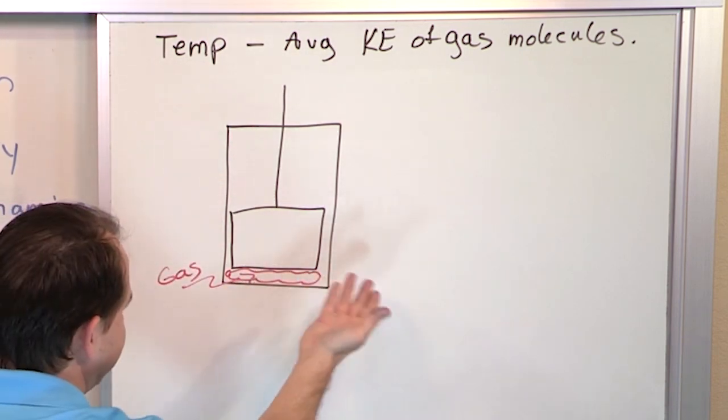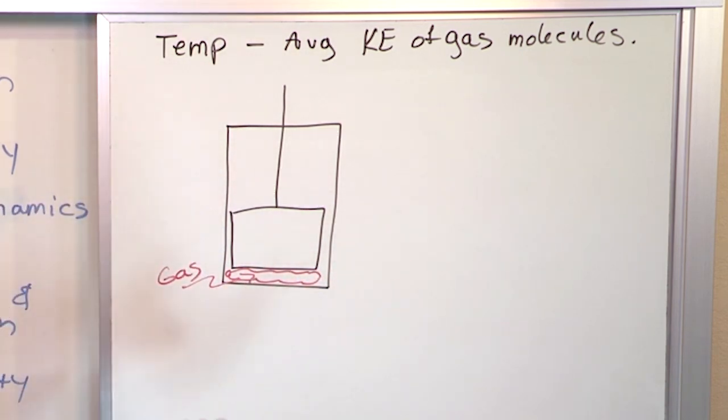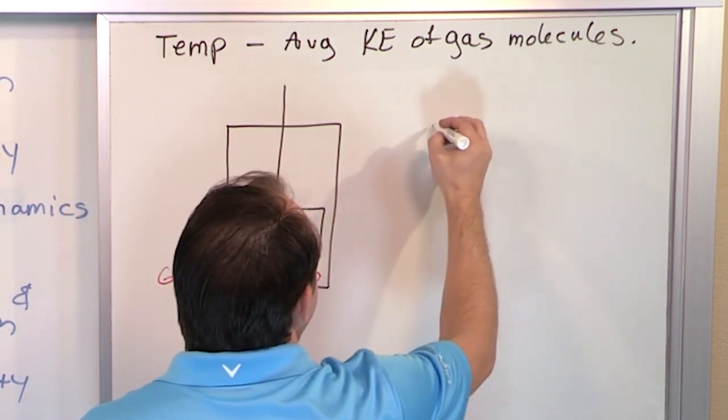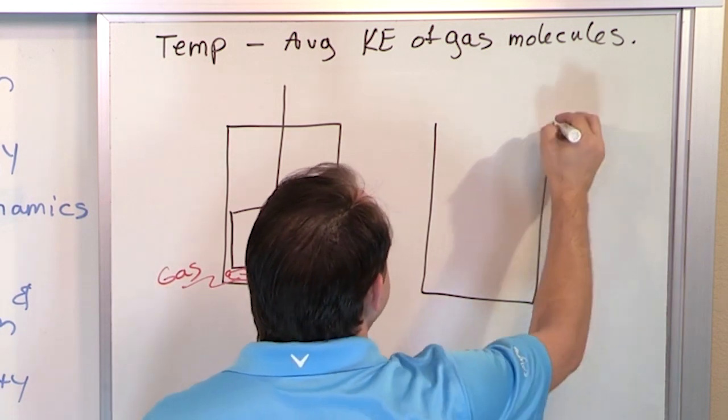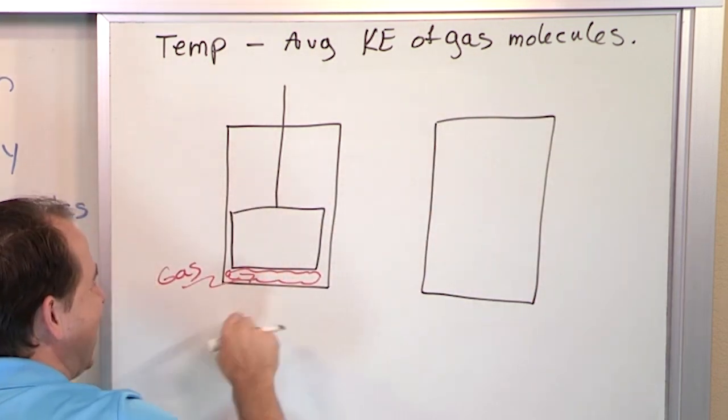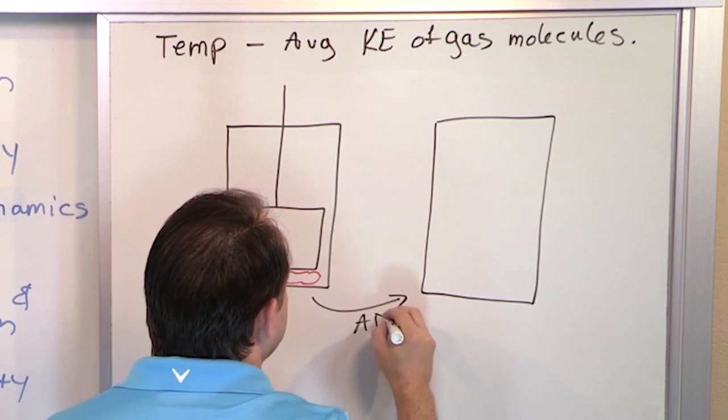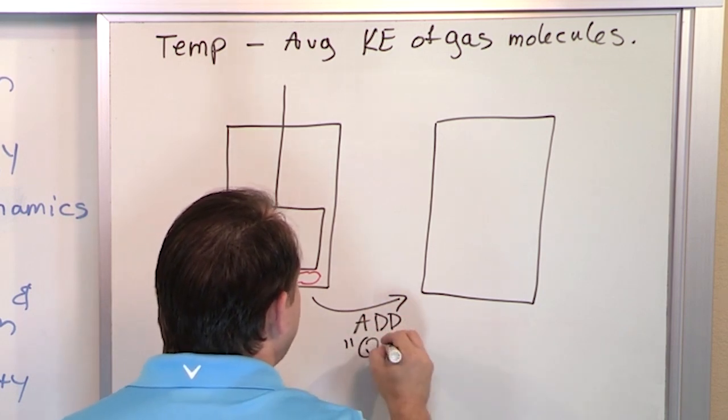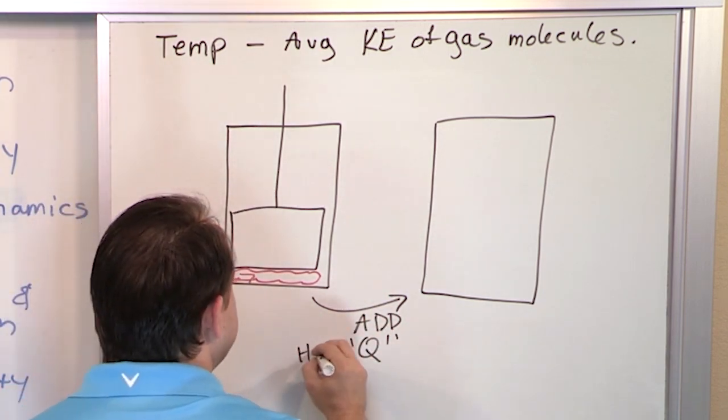It has a certain temperature and has a certain volume there. But what do you think is going to happen? And I know that you know the answer. What do you think is going to happen if I take this gas and I add heat to it? In other words, add heat, which we actually call Q in physics, heat. You can look up the historical reasons why we call it Q.